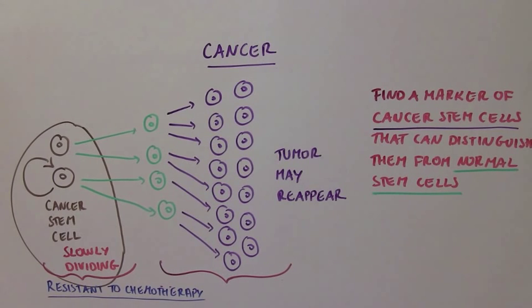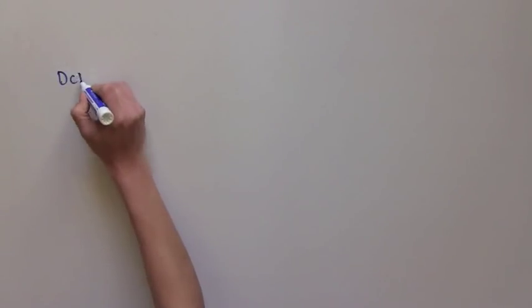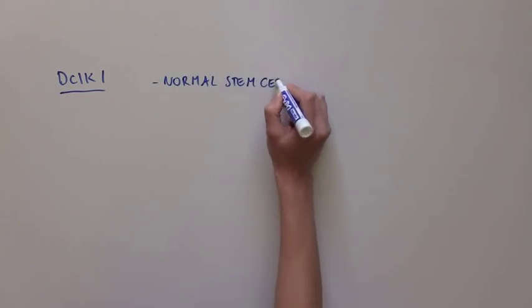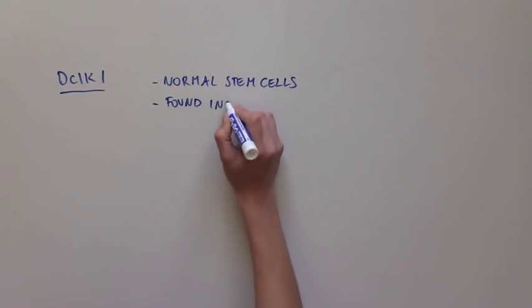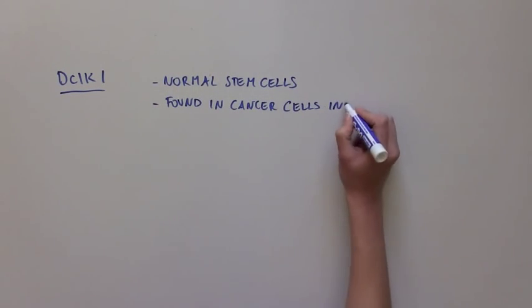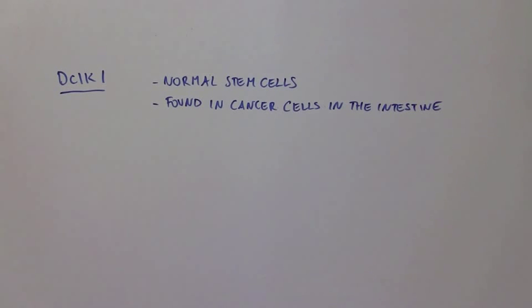The scientists of this article focused on a protein called DCLK1 that was thought to mark normal stem cells, but it was also found in some cancer cells in the intestine. So they were curious to see which intestinal cells contain DCLK1.